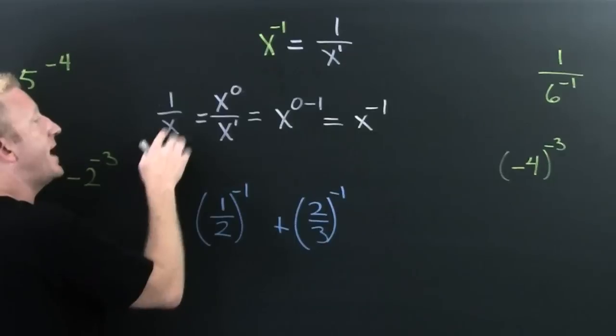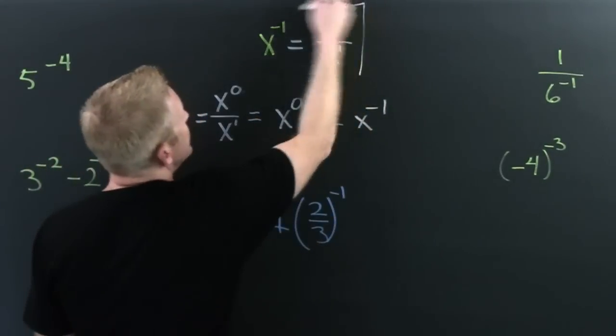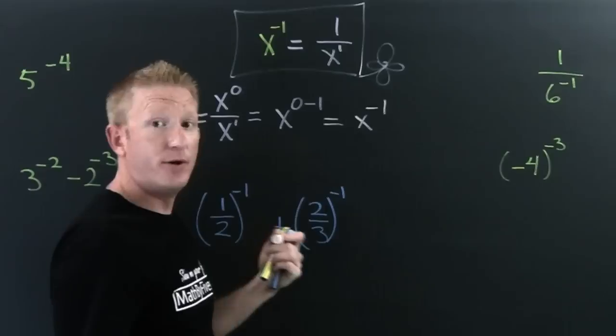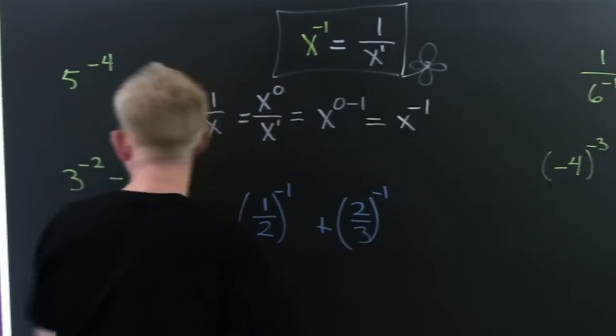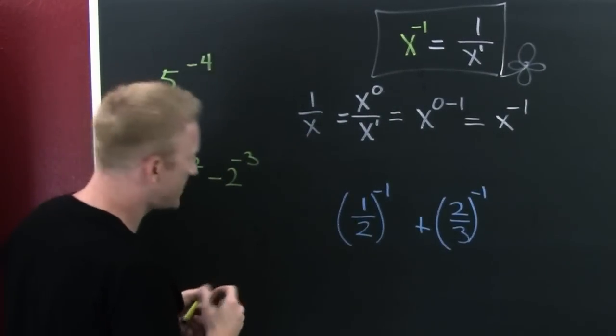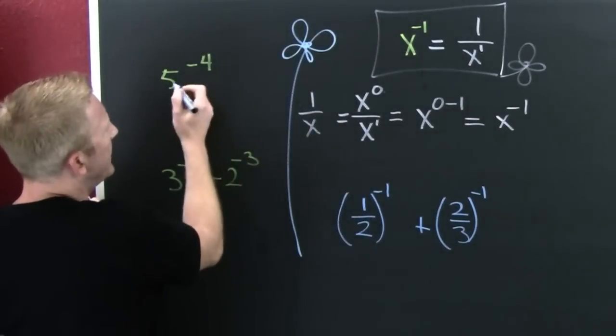We have 1 over x is the same as x to the minus 1. And that's how we get our negative property of exponents. So now we need to see some examples here.